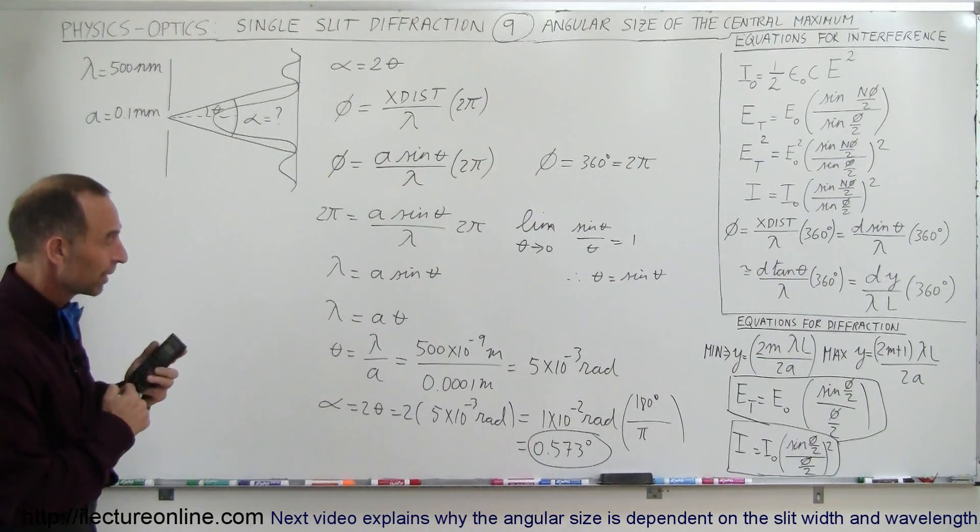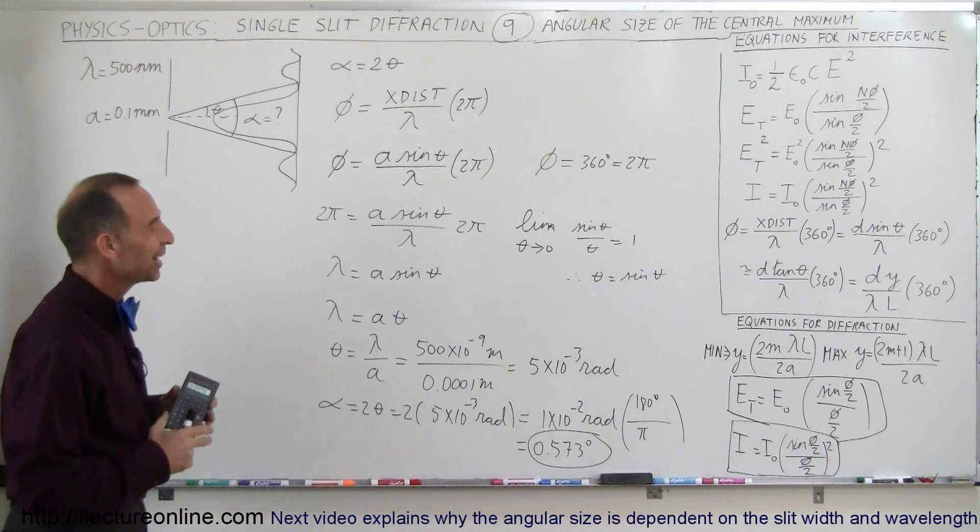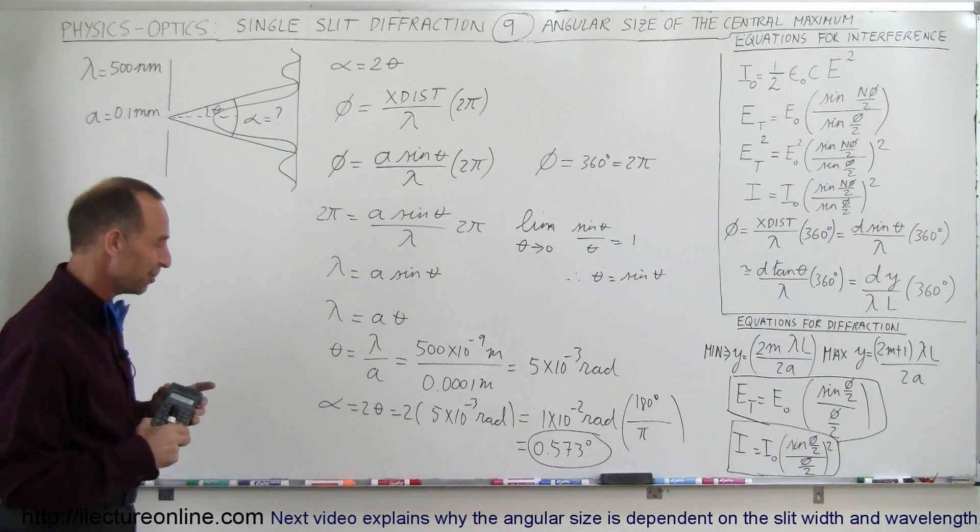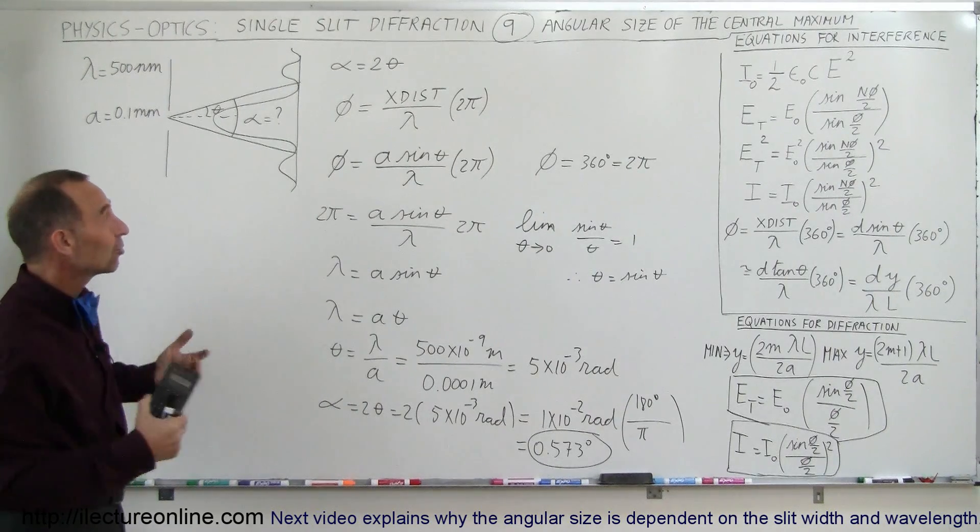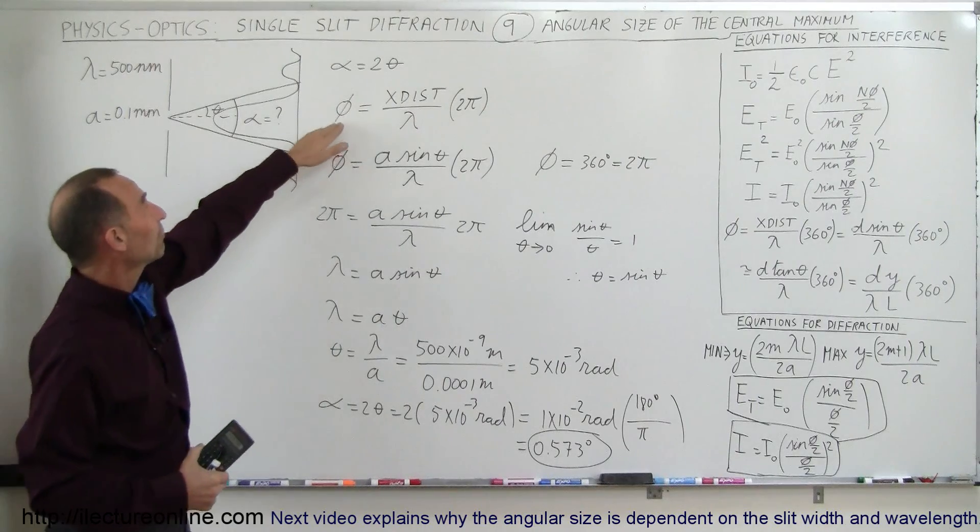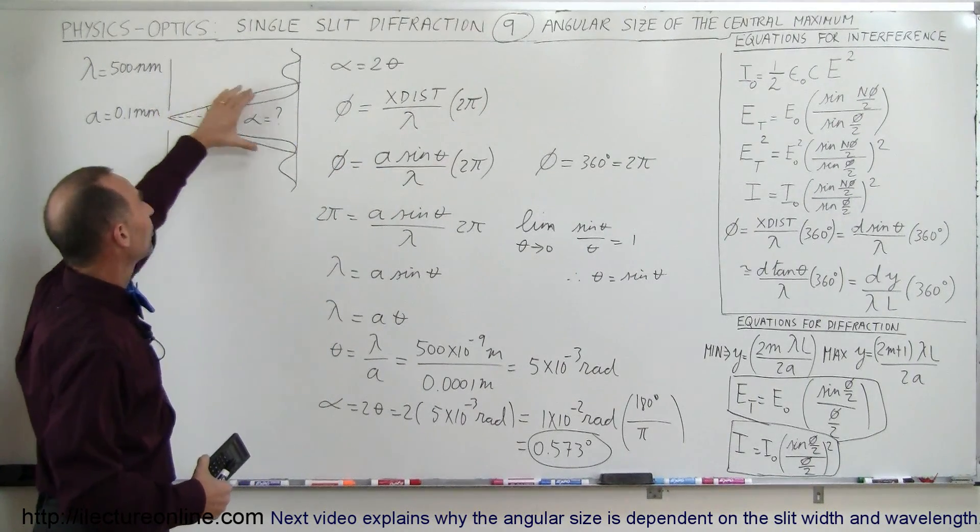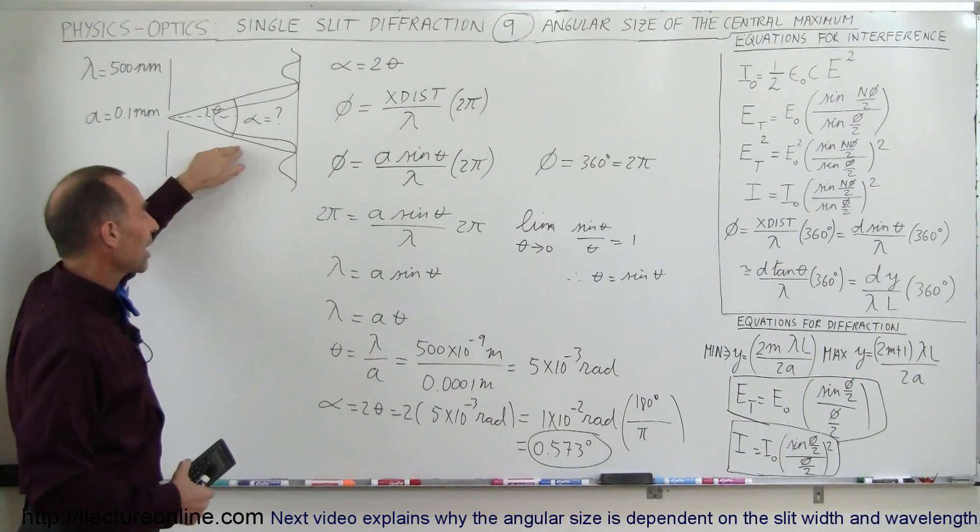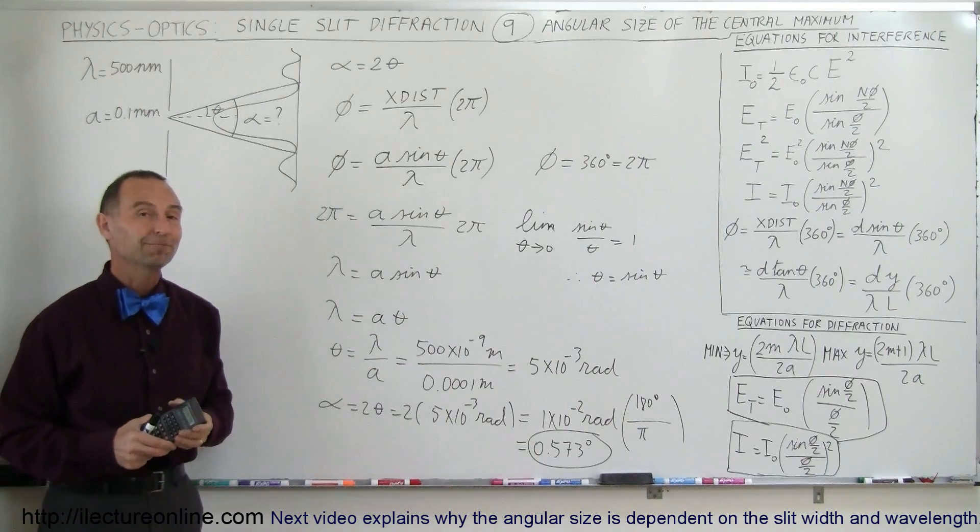Pretty interesting. Yeah, and it turns out it is 57.3 degrees per radian. When I think about it, I just couldn't think of the right number. Alright, so that's how we do that. A little bit of manipulation, understanding of the relationship between the phase difference and the lookup angle, and twice the lookup angle will give us the angular size of the central maximum, and then we have to do a little bit of manipulation to get to the final answer. And that's how we do that.